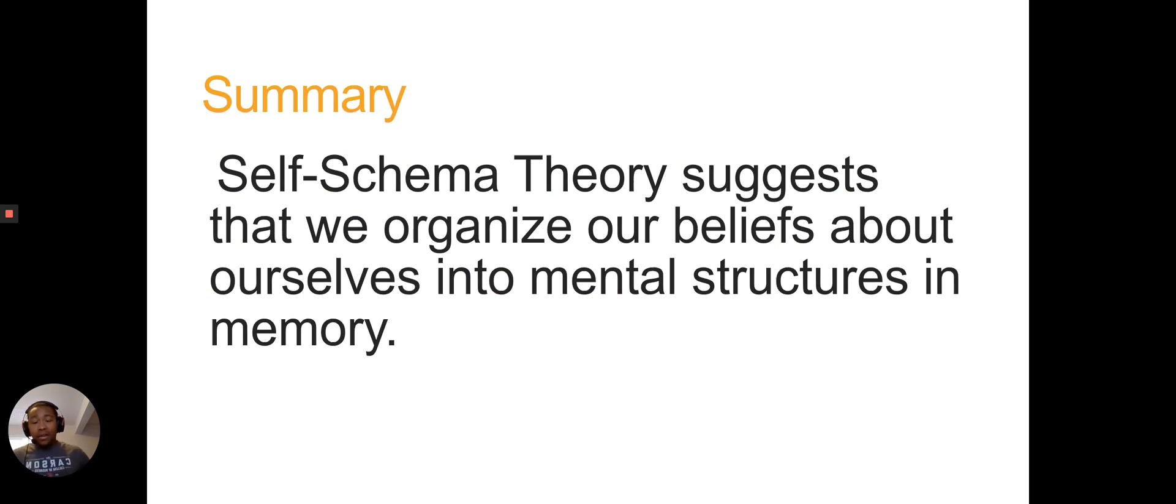So a summary for self-schema theory is that it suggests that we organize our beliefs about ourselves into mental structures in memory. We collect, we build our trees, we plant our trees and they grow, and that determines what we believe about ourselves and what we say about ourselves. So this is another one that is a little longer than I would hope. So the critical thinking challenge for this one is due tomorrow at 11:59 p.m. That will end our unit three. We're just going to do one learning standard per unit, so that will end our unit three critical thinking challenges. The critical thinking challenge for each theory is how you'll be graded in terms of critical assessments. All right, so have a great day, and I will see you again Friday.